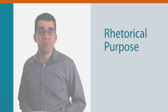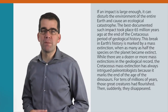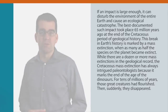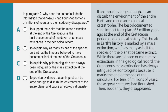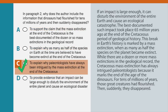Now, let's look at an example of a rhetorical purpose question. It asks about information from a different paragraph in the same reading passage about meteorites and dinosaurs. It's like an inference question, but it asks why the author includes a particular piece of information. When reading each answer choice, the most important part to focus on is the two clause at the beginning of each one. Then pick the answer that best describes what the author is trying to do. In this case, the correct answer is C.